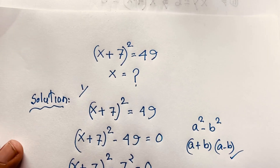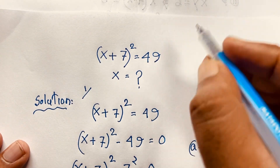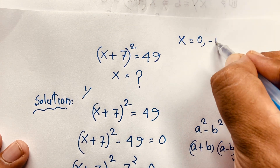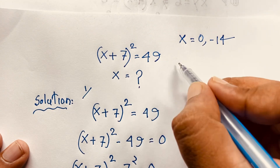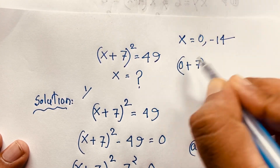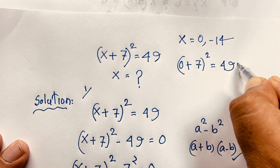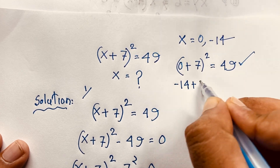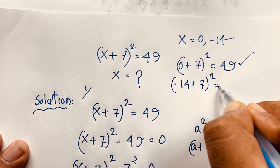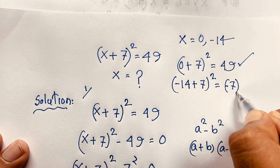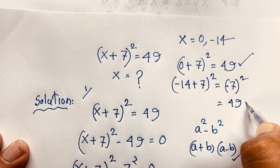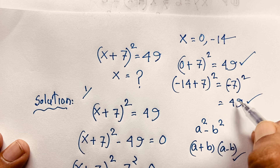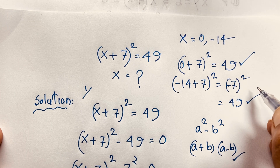Let's verify: (x + 7)² = 49, where x = 0 and x = -14. If x = 0: (0 + 7)² = 49 ✓. Left hand side equals right hand side. If x = -14: (-14 + 7)² = (-7)² = 49 ✓. Since a negative number raised to an even power is always positive, this is 49. Left hand side equals right hand side.